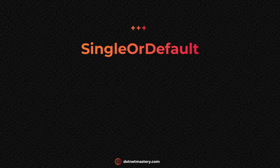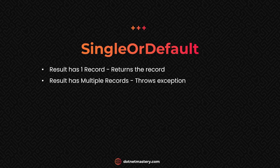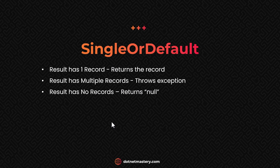Next, we have SingleOrDefault, which works exactly the same as Single — but if no records are found, it returns null instead of throwing an exception. So the difference between Single and SingleOrDefault is only in the no-records scenario. If there is one record or multiple records, the behavior stays the same between Single and SingleOrDefault.